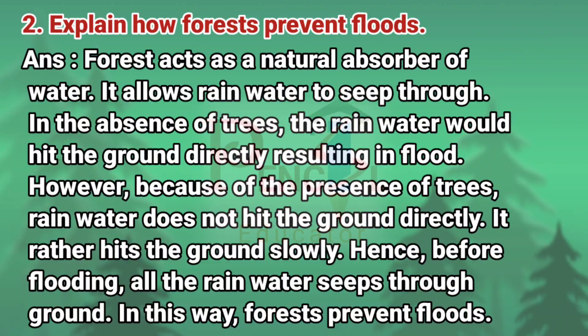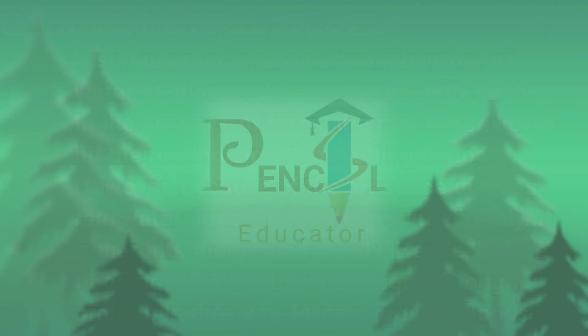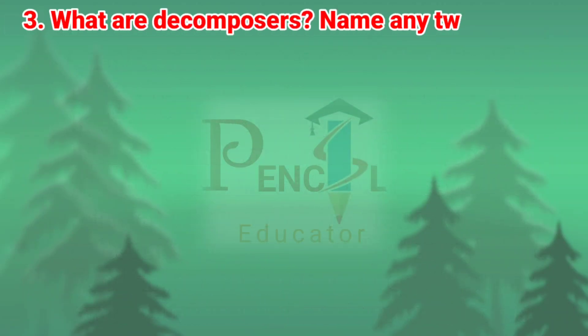However, because of the presence of trees, rainwater does not hit the ground directly. It rather hits the ground slowly. Hence, before flooding, all the rainwater seeps through the ground. In this way, forests prevent flood.